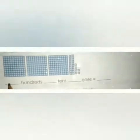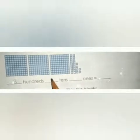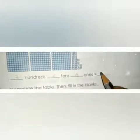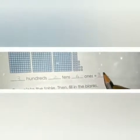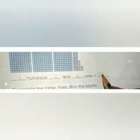So we have three hundreds, two tens, and six ones. Combining these, you write it as the number three hundred twenty-six.